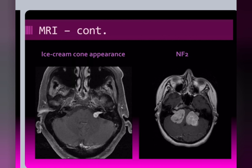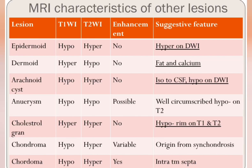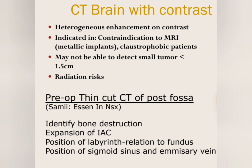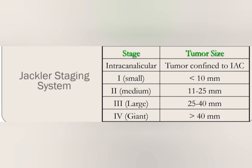In neurofibromatosis type II-associated acoustic neuromas, they may present as bilateral acoustic neuromas. These are the differential diagnoses of acoustic neuroma that can present at the cerebellopontine angle, and with the help of MRI it is possible to distinguish between them. When MRI is unavailable, CT contrast can be done, but it does not pick up small tumours. It can help identify bony destruction, expansion of the IAC, and the position of the sigmoid sinus and emissary vein, which are important if planning a retrosigmoid approach.